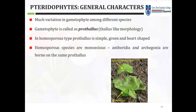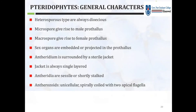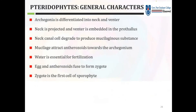In homosporous types, the prothallus is simple, green, and heart-shaped. Homosporous species are monoecious — antheridia and archegonia are borne on the same plant. Heterosporous types are always dioecious: microspores give rise to male prothallus and macrospores give rise to female prothallus. Sex organs are either embedded or projected in the thallus depending on the type of Tracheophyte. The antheridium is surrounded by a sterile jacket, always single-layered.